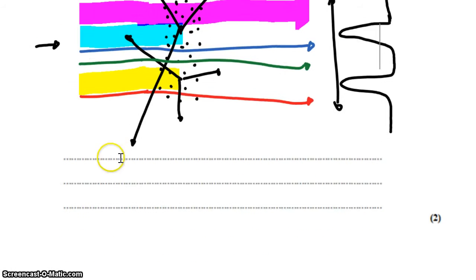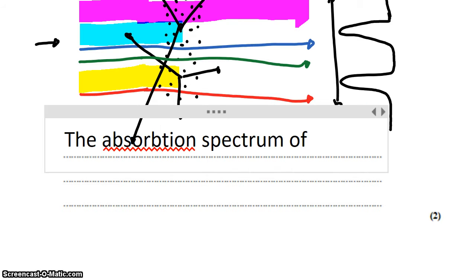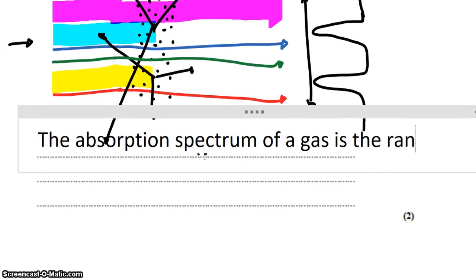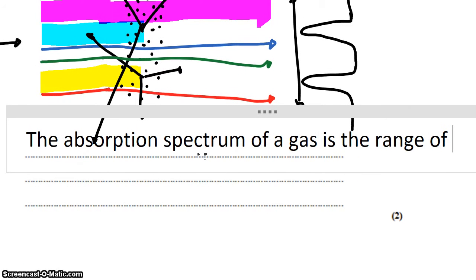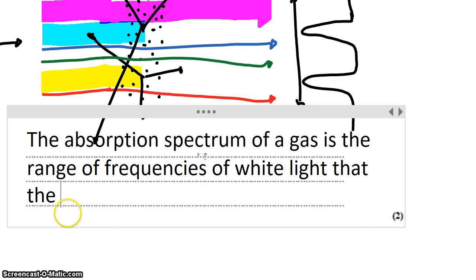So then finally, what is meant by absorption? The absorption spectrum of a gas - I suppose it could be things other than a gas, we typically talk about gases - the absorption spectrum of a gas is the range of frequencies of white light that the gas does not absorb.